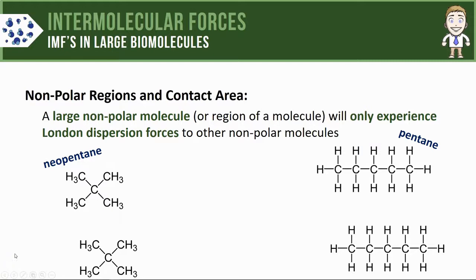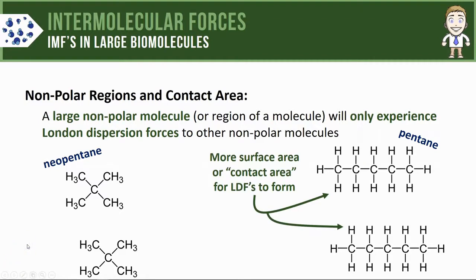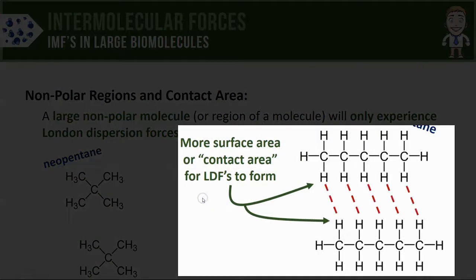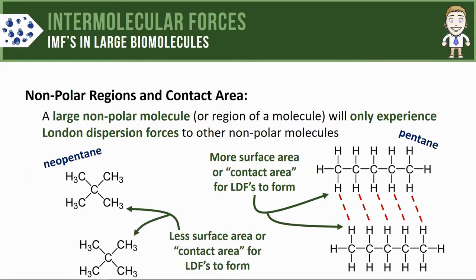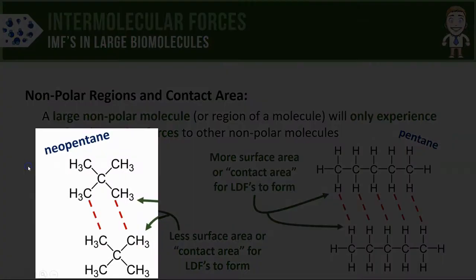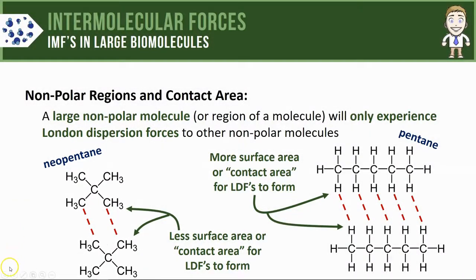You might notice right off the bat that the two pentane molecules are longer and straighter. This allows the two molecules to line up next to each other with more contact area — or what you might also call more surface area. The more surface area there is for these two molecules to come in contact with each other leads to increased chances for London dispersion forces to form, represented here with these red dashed lines. Looking at the neopentane molecules, you'll notice they're much more compact, meaning there's less surface area where the two neopentanes can come in contact, so fewer London dispersion forces can form.